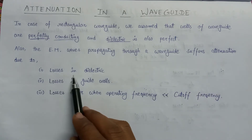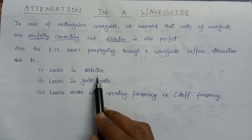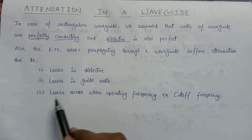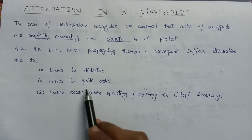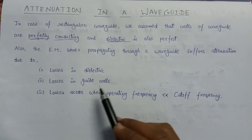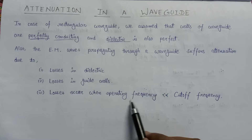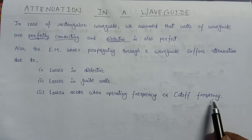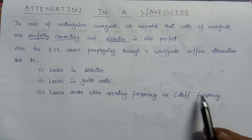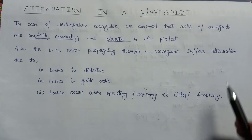The first loss occurs due to losses in the dielectric. The second loss occurs due to the inner waveguide walls. And the third loss occurs when the operating frequency is less than the cutoff frequency. Due to these three scenarios and three loss types, attenuation occurs.